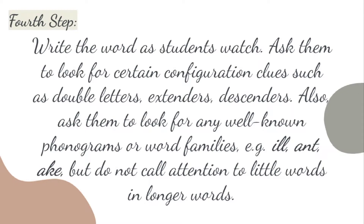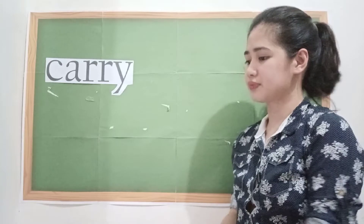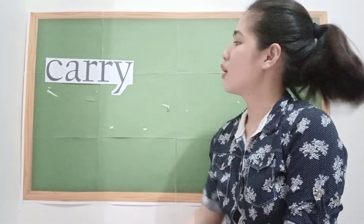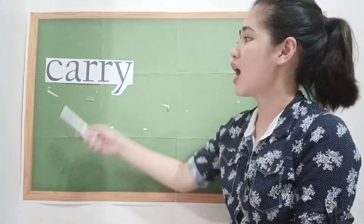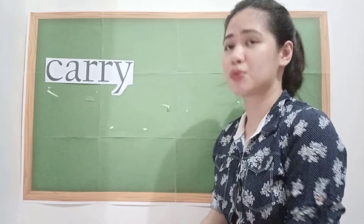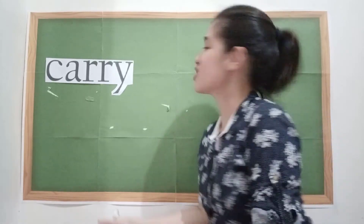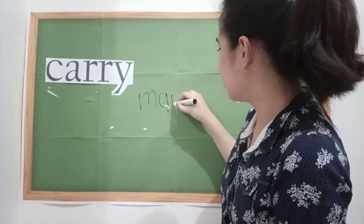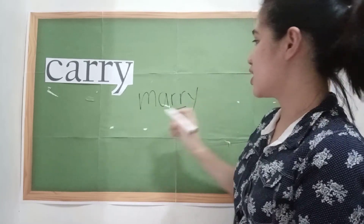Fourth step in correcting sight word knowledge deficit: write the word for students to watch. Ask them to look for certain configuration clues such as double letters, extenders, or descenders. Also ask them to look for any well-known phonograms or word families — for example, 'ill' and 'ache' — but do not call attention to little words in longer words. What can you notice in this word? The word has double R. Yes, that's correct — carry has double R. Can you give me an example of a word that also has double R? The word marry also has double R, just like carry.